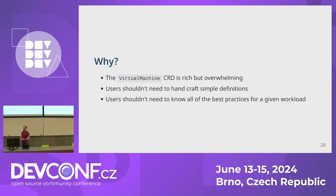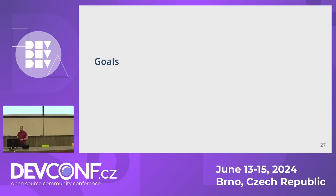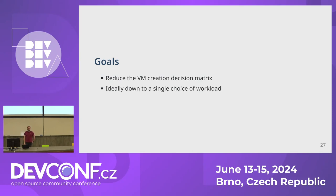Users shouldn't need to know all the best practices for a given workload — for example, that the devices list is required even if you're not putting any disks in the VM. We should make it as easy as possible to get a running workload in KubeVirt. The initial goals with this work were to reduce the VM creation decision matrix — distill it down to as few choices as possible, ideally to a single choice of workload — while always providing a valid, runnable VM.